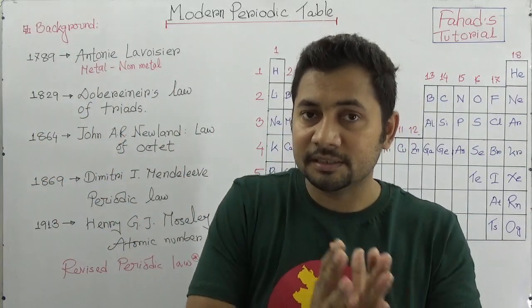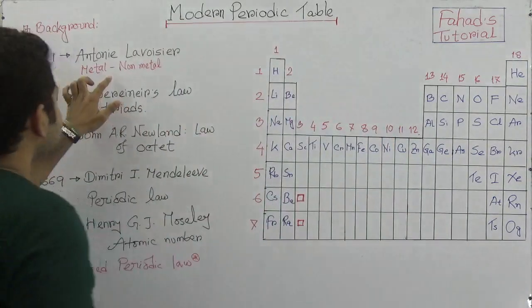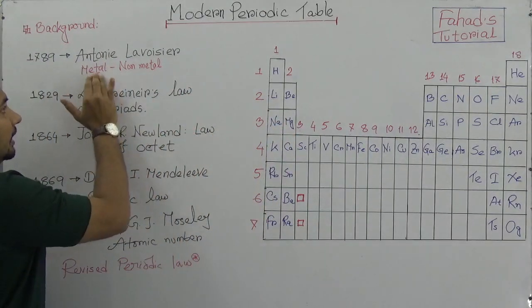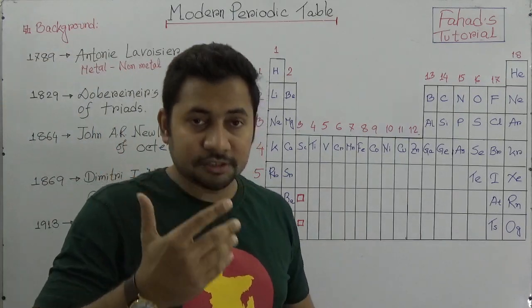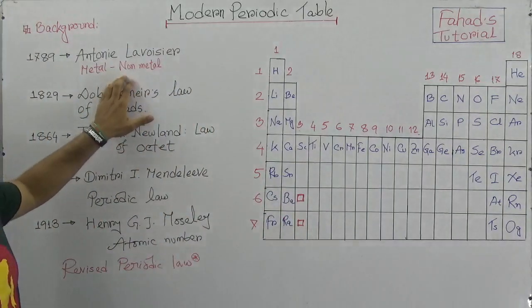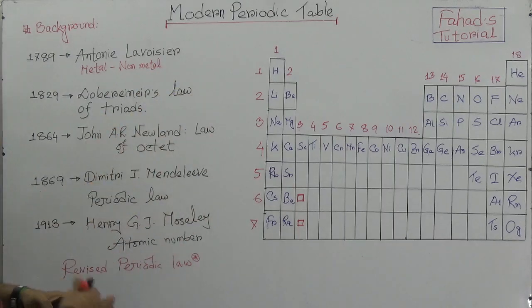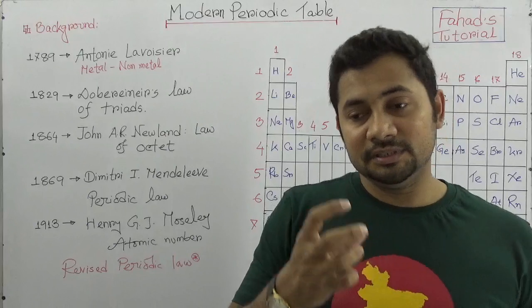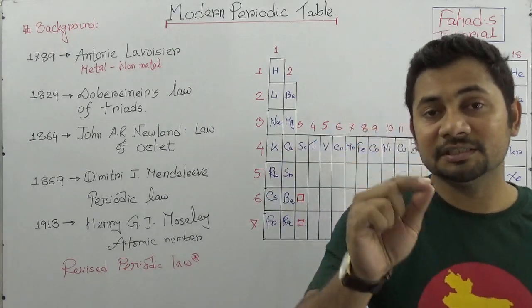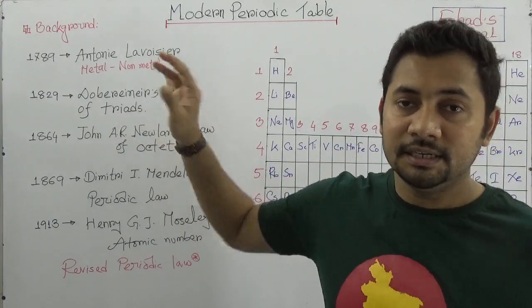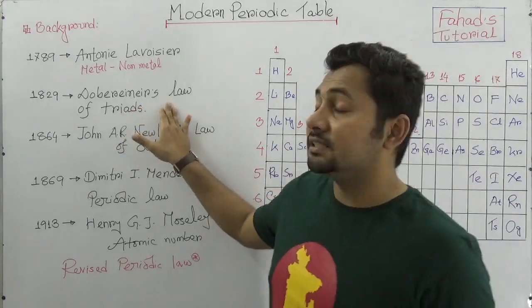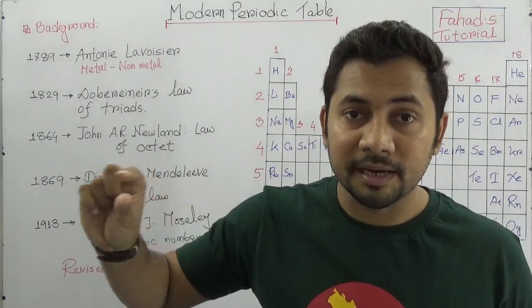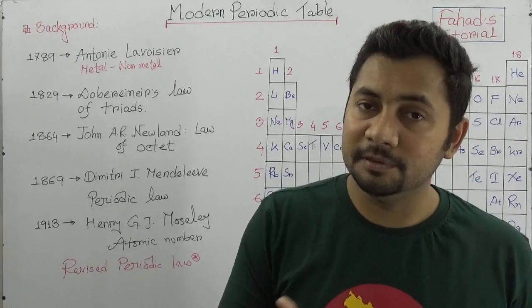So the first efforts to bring some organization to the elements came from Antoine Lavoisier, who divided elements into two groups: metals and non-metals. Then, in 1829, Döbereiner came with a new idea called Döbereiner's Law of Triads — and that is important for your question paper. Triads means three elements together. Döbereiner stated that if the elements are arranged according to their relative atomic mass — and you should already know what relative atomic mass is from my previous class — then something interesting happens.